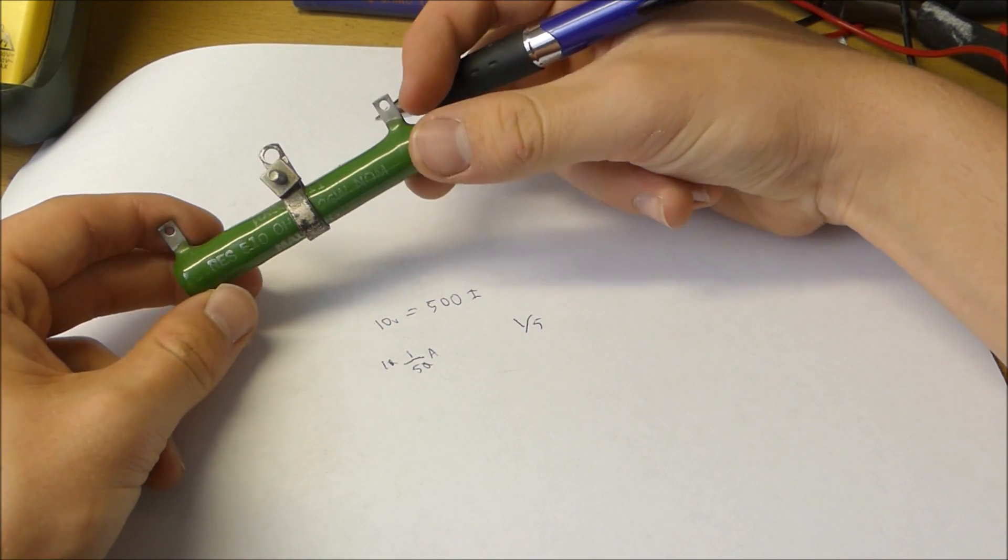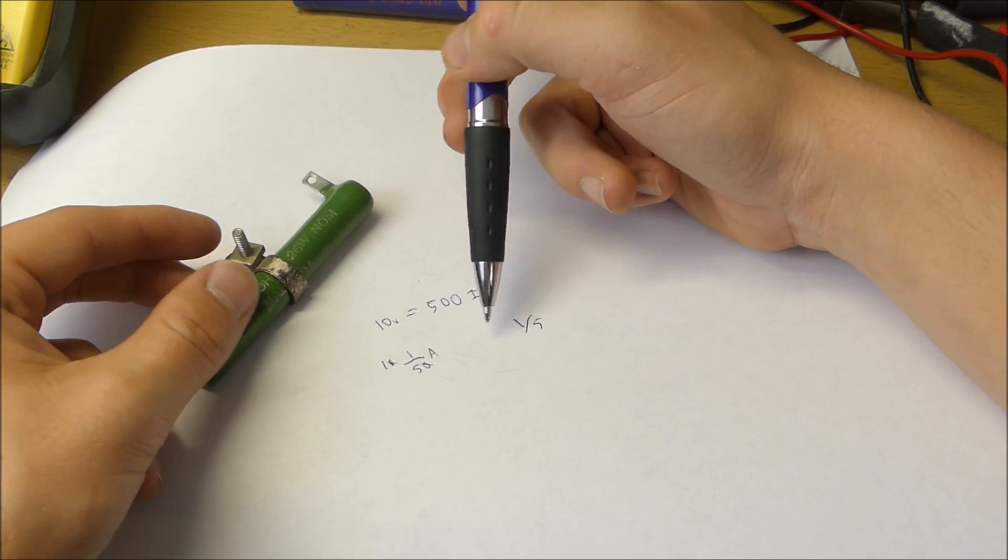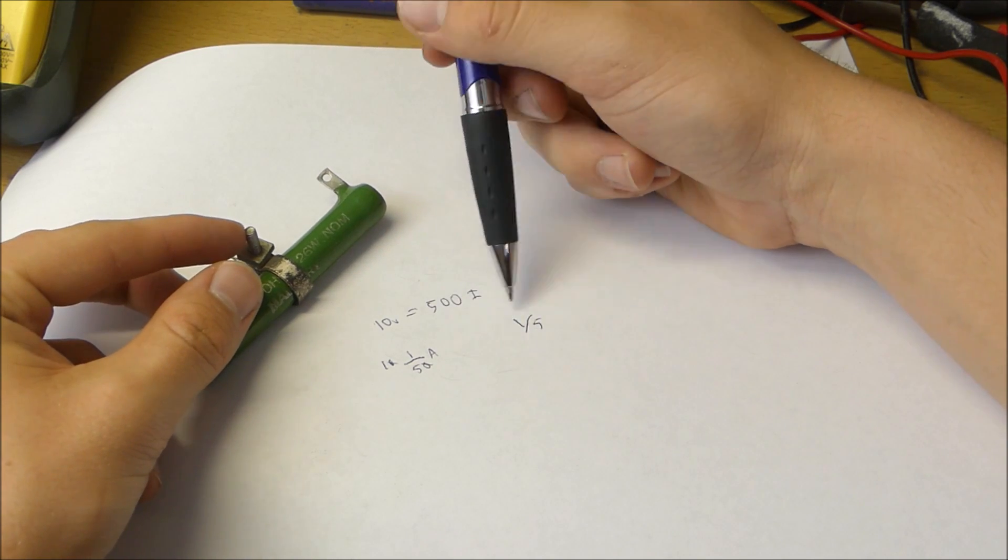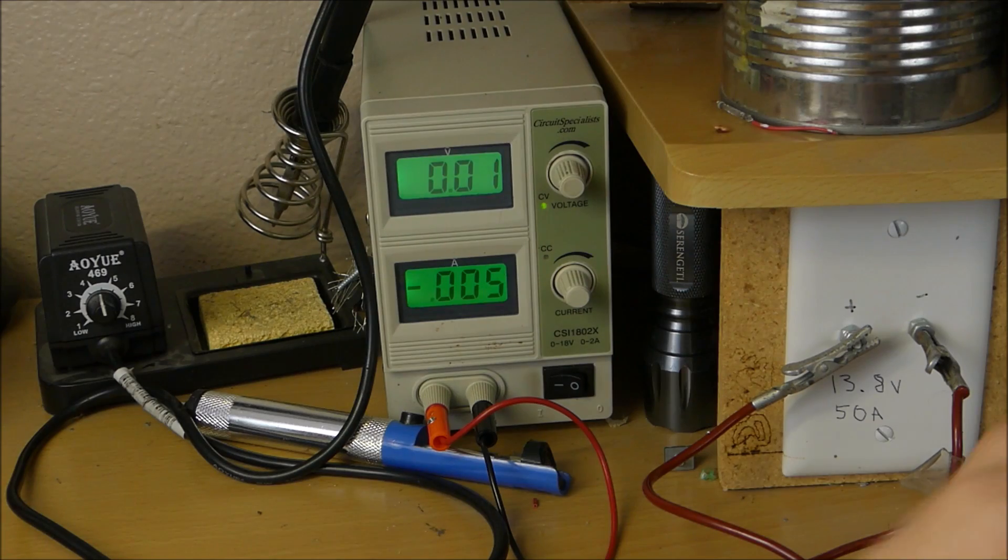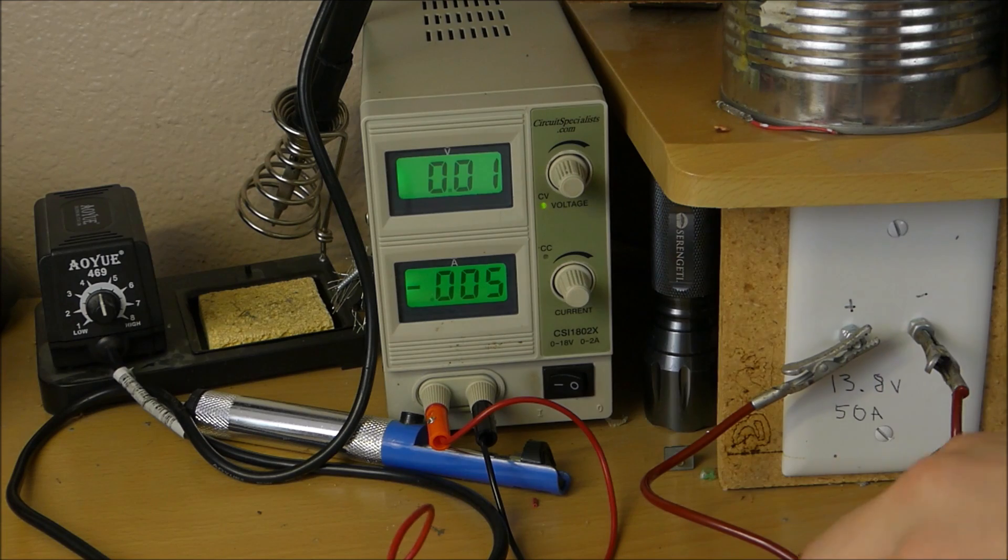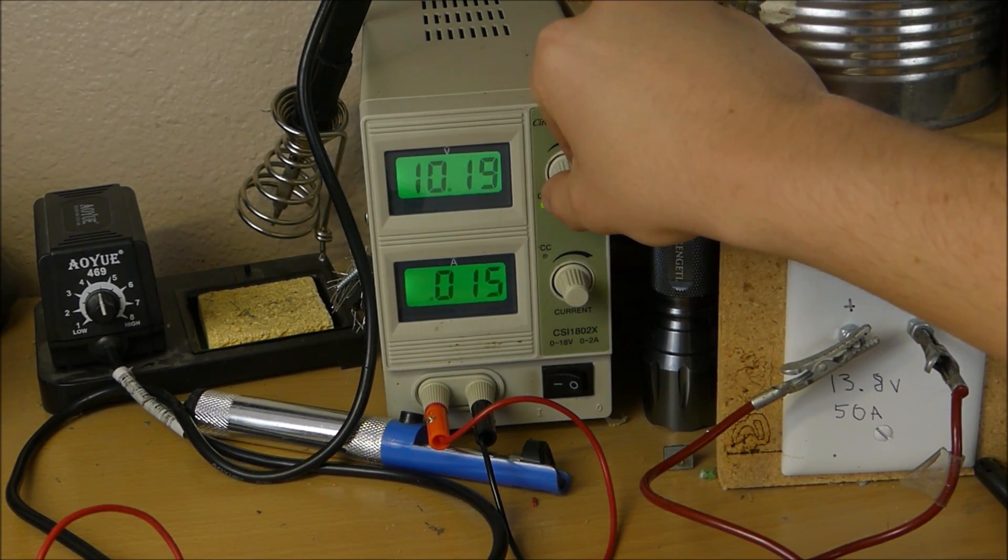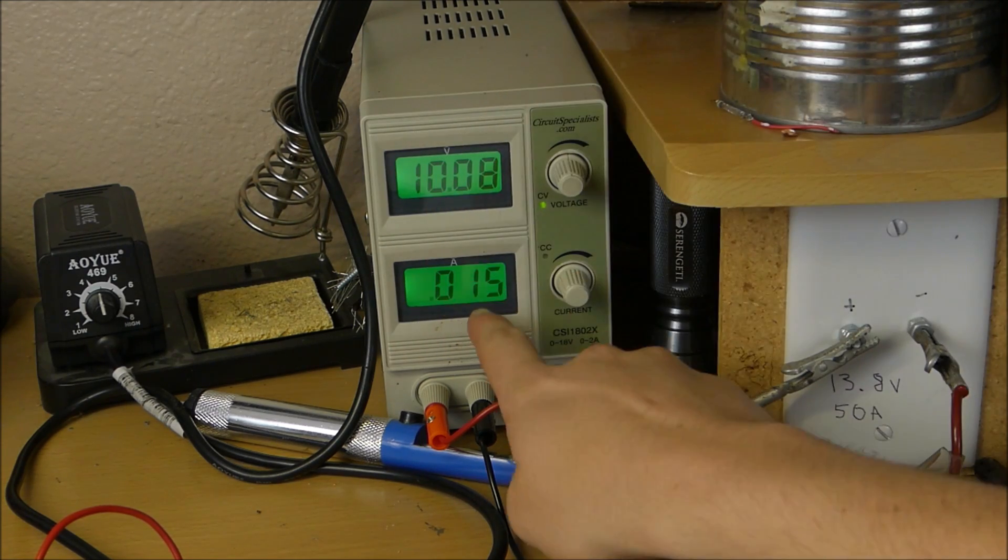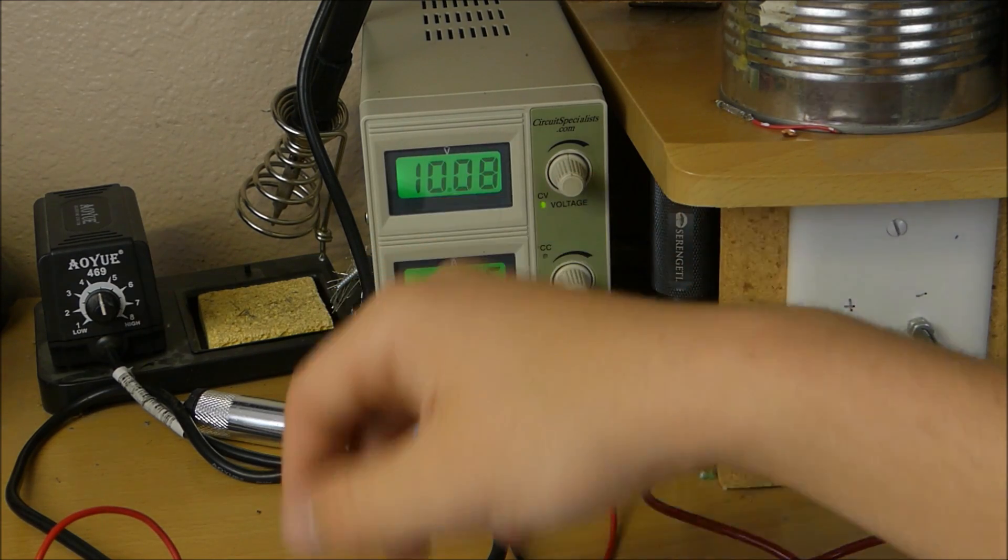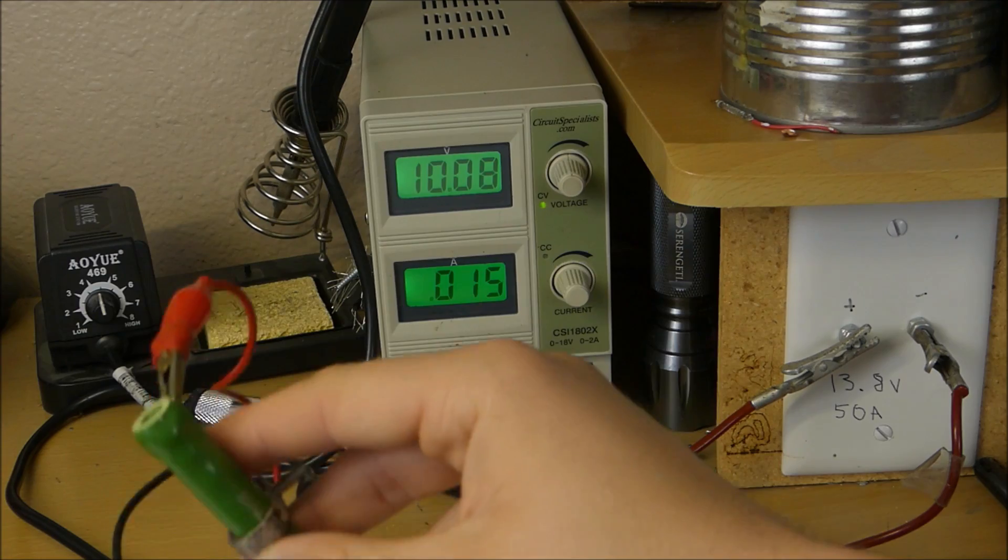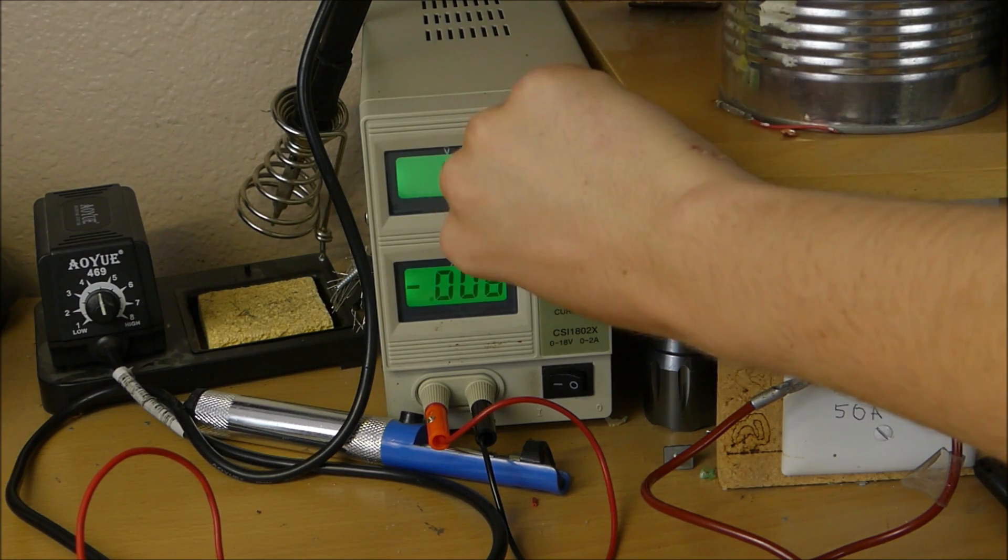So that means if we put 10 volts across this resistor, we'd have a current flow of 1/50th amps. We'd have a wattage discharge of 1 fifth of a watt. So let's test that out, shall we? As you can see, when I connect my resistor up to this power supply, and we crank it up to 10 volts, you see we have a current flow of 15 milliamps, which is about 1 over 50 amps. So we're able to calculate that correctly. And so this resistor isn't even getting very hot, because there's a very small amount of power flowing through it. Let's try it with a smaller resistor and do some more calculations there.